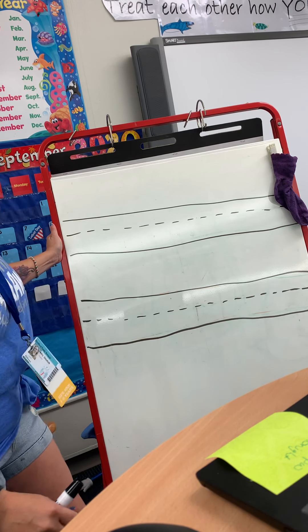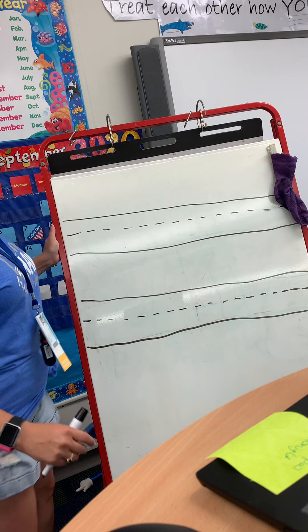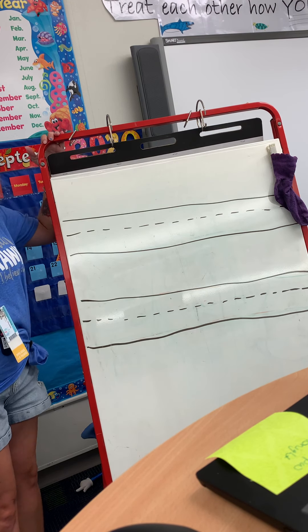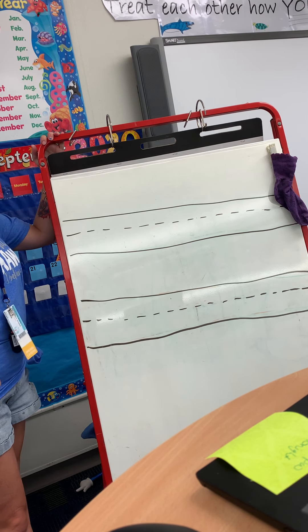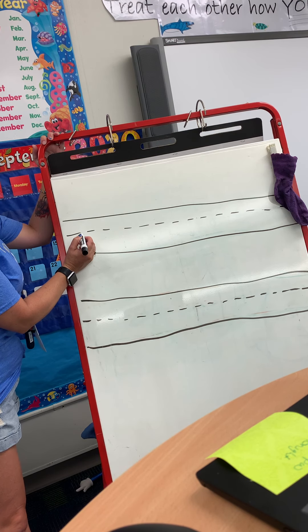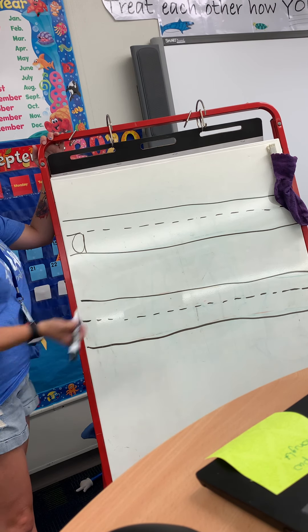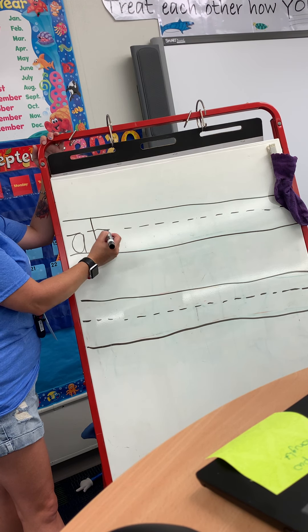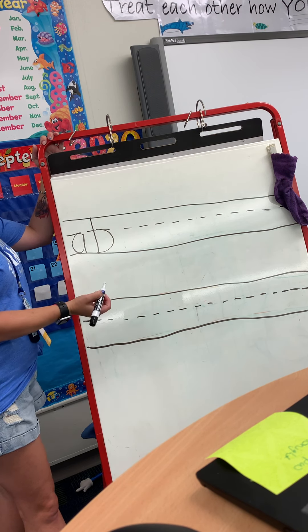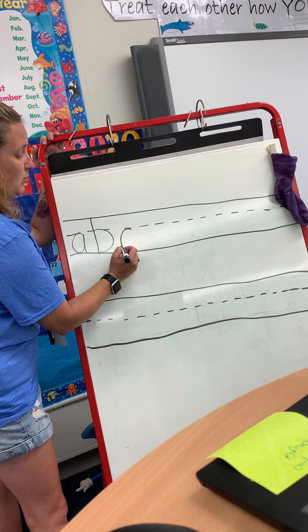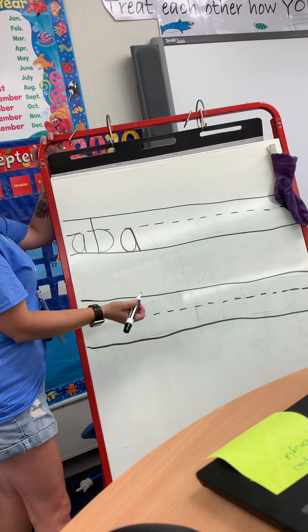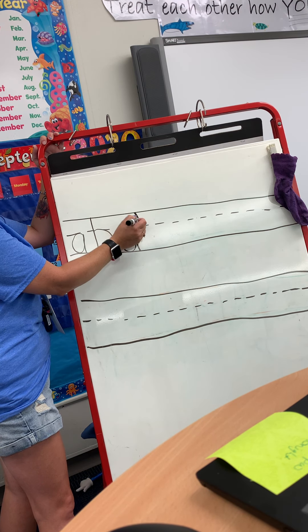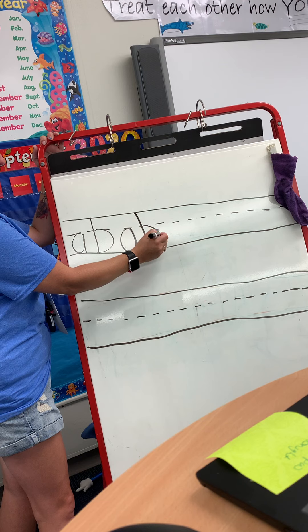We are going to practice writing our A's and our B's. We're going to write an A-B pattern. Our A starts in the middle, and it goes around the tree, up the tree, down the tree. And our B starts at the very top — first the bat, then the ball. And now an A again: around the tree, up the tree, down the tree. And then the B starts at the top — first the bat, then the ball.